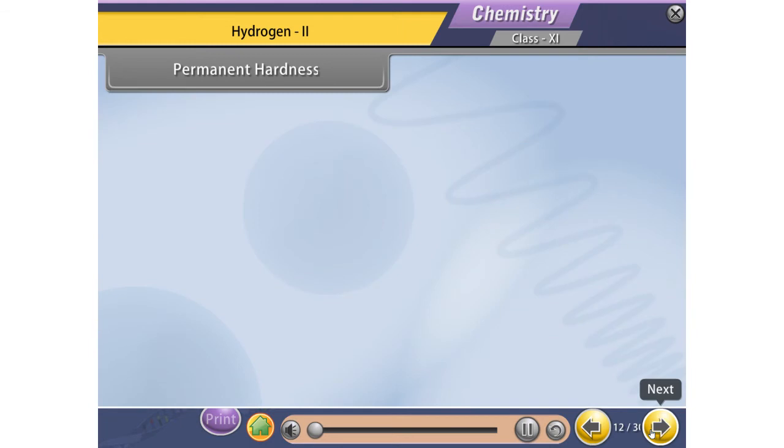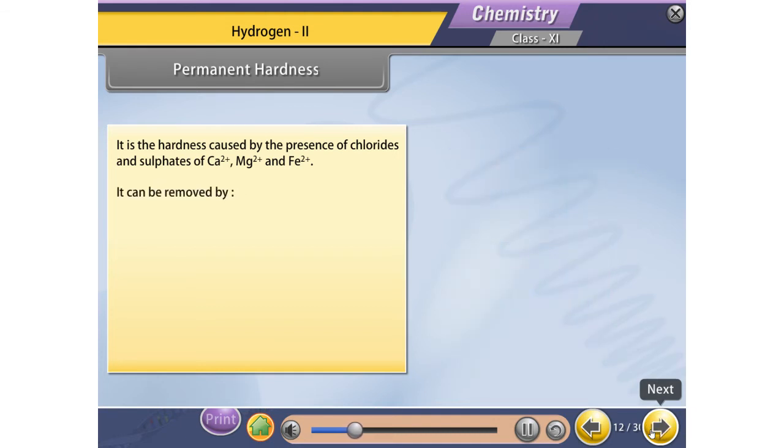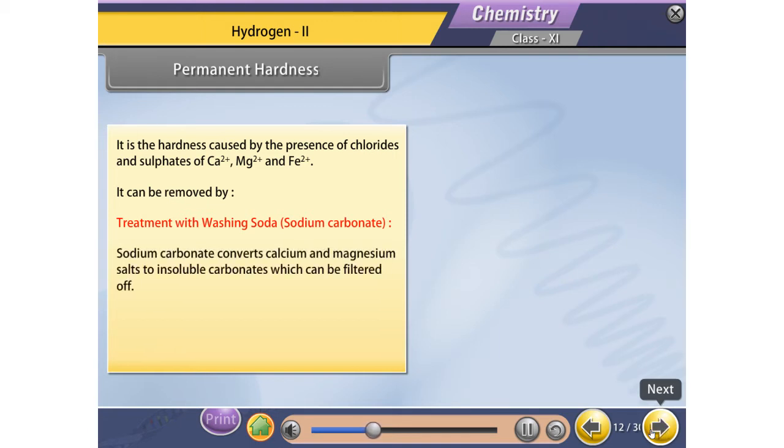Permanent hardness: It is the hardness caused by the presence of chlorides and sulfates of Ca2+, Mg2+, and Fe2+. It can be removed by treatment with washing soda or sodium carbonate. Sodium carbonate converts calcium and magnesium salts to insoluble carbonates which can be filtered off.